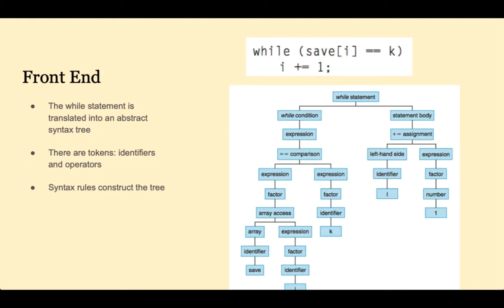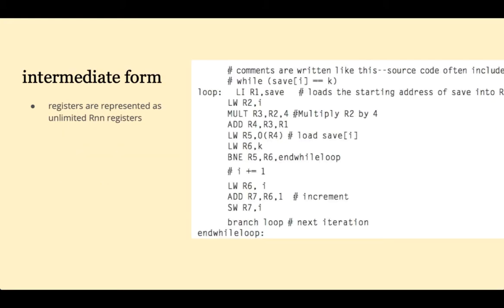First, the code is parsed into tokens. Tokens are reserved words, user-defined identifiers, operators, numbers, and punctuation. The tokens are then parsed into a syntax tree, somewhat like how you would parse an English sentence into a tree diagram. The compiler follows the rules of syntax for that particular language. In the intermediate form, registers are represented by R followed by a number, and at this stage it's assumed there are an unlimited number of registers. The registers will be assigned at a later stage.